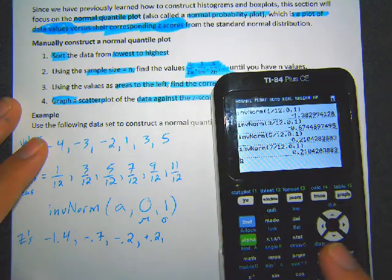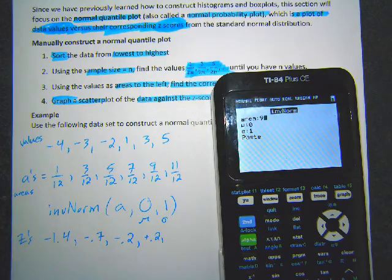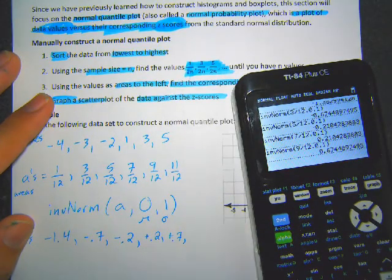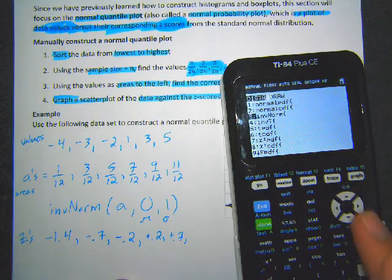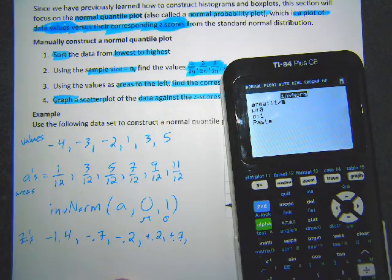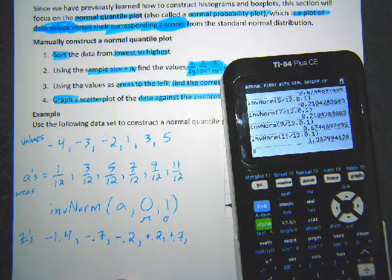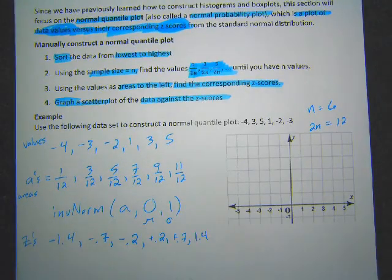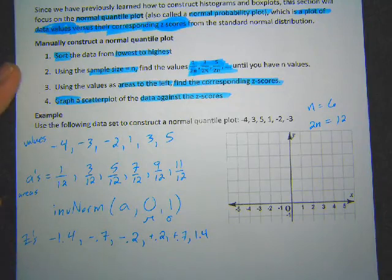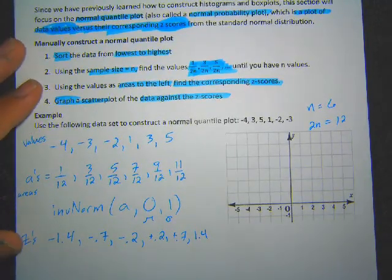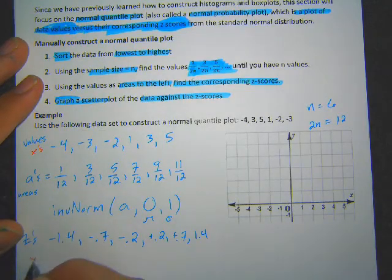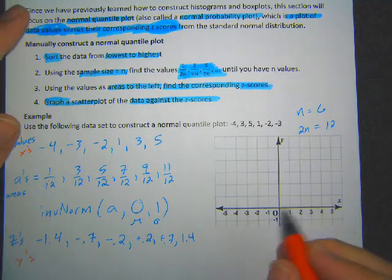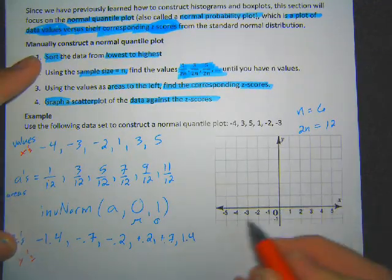Continuing: 9 over 12 gives me positive 0.7, and 11 over 12 gives me positive 1.4. There's a symmetry here, which isn't too surprising given the equally spaced fractions. Now we graph using the sorted data values as our x-coordinates and the z-scores as our y-coordinates. The first pair is negative 4 and negative 1.4, so I plot x = negative 4, y = negative 1.4. Next is negative 3 and negative 0.7.